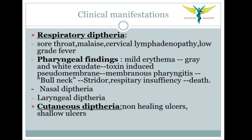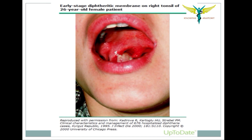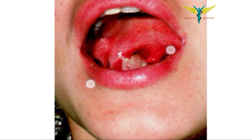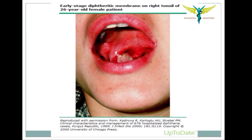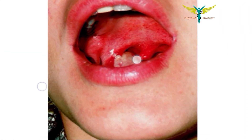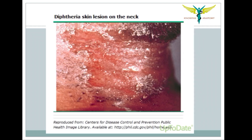Diphtheria can also cause nasal diphtheria and laryngeal diphtheria. Cutaneous diphtheria forms non-healing shallow ulcers. Here you can see a case of respiratory diphtheria showing the pharyngeal membrane, and an early stage where the membrane is formed on the right tonsil. This image shows cutaneous diphtheria.